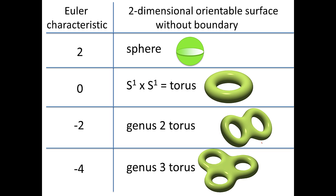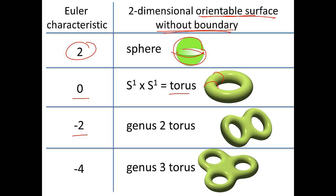While the Euler characteristic is not a perfect invariant, we can actually use it to identify orientable surfaces without boundary. If I know I have an orientable surface without boundary and I calculate the Euler characteristic and get two, then I know I have the sphere. If it's zero, I have the torus. If it's minus two, I have the genus-two torus. If it's minus four, I have the genus-three torus. Also, if I know the number of boundary components, I can use the Euler characteristic to identify any orientable surface. Similar results also hold for non-orientable surfaces.